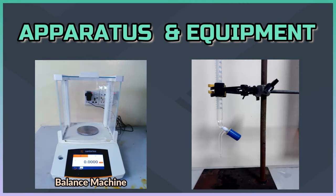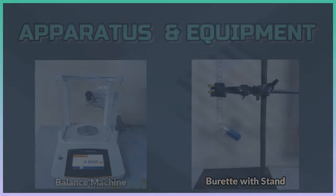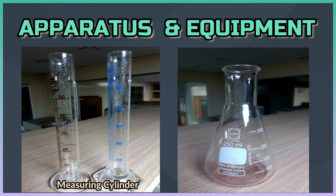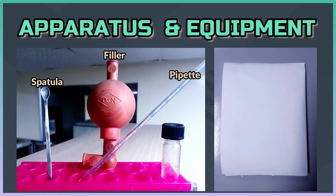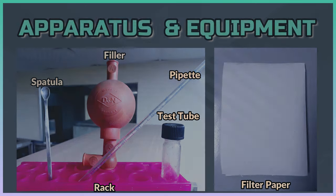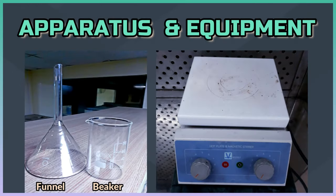To do this test we need a balance machine, burette with stand, measuring cylinder, Erlenmeyer flask, spatula, filler, pipette, test tube, rack, filter paper, funnel, beaker, and hot plate.